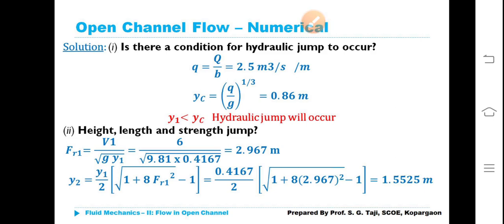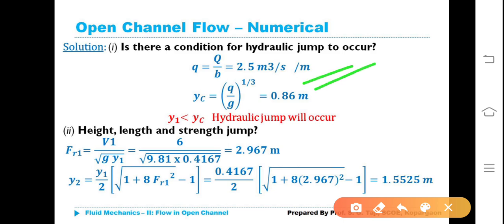Discharge per unit width: q = Q/B = 9/3.6 = 2.5 m³/s per meter. Critical depth YC = (q²/G)^(1/3). Substituting q = 2.5 and G = 9.81 m/s², YC = 0.86 meters.